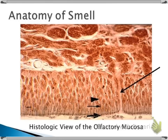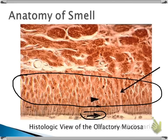This is a histologic view of olfactory mucosa. At this large black arrow, this is where the cilia and mucus layer are located. This region is where the cell bodies of the supporting epithelial and olfactory receptor neurons are found, all intermingled. This arrow is pointing to a Bowman's gland, with its tract secreting the mucus layer.